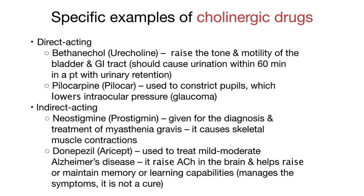Specific examples of cholinergic drugs include the direct acting bethanechol, or urocholine, which increases the tone and motility of the bladder and GI tract and should cause urination within 60 minutes in a patient with urinary retention. Pilocarpine, or pilocar, is used to constrict pupils, decreasing intraocular pressure, and is used for glaucoma. Indirect acting cholinergic drugs include neostigmine, or prostigmine, given for the diagnosis and treatment of myasthenia gravis, causing skeletal muscle contractions. Donepezil, or Aricept, is used to treat mild to moderate Alzheimer's disease, increasing acetylcholine in the brain to help maintain memory and learning capabilities, though it manages symptoms and is not a cure.